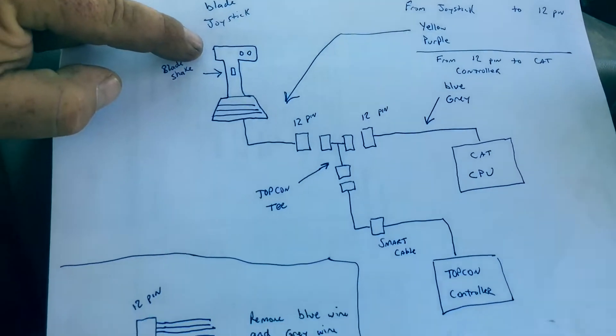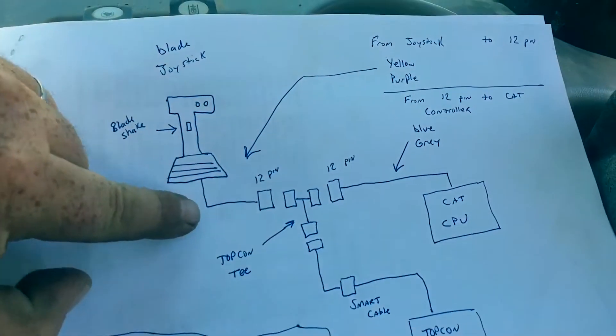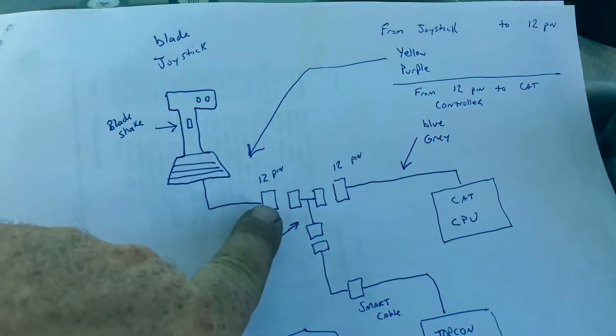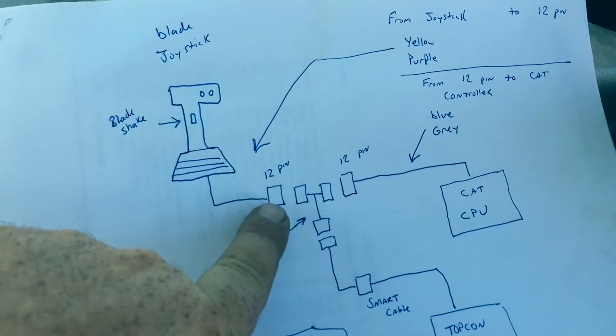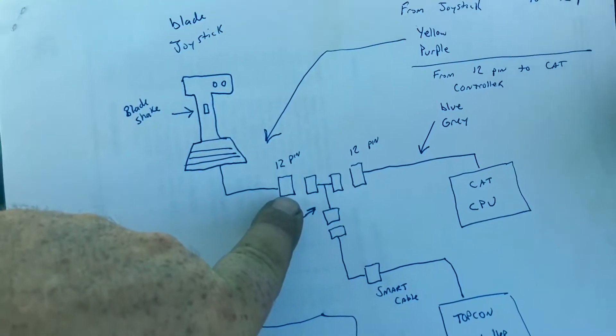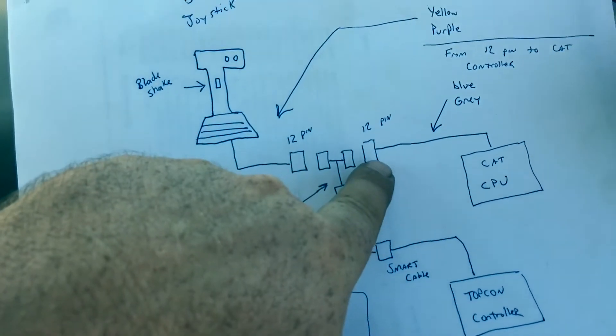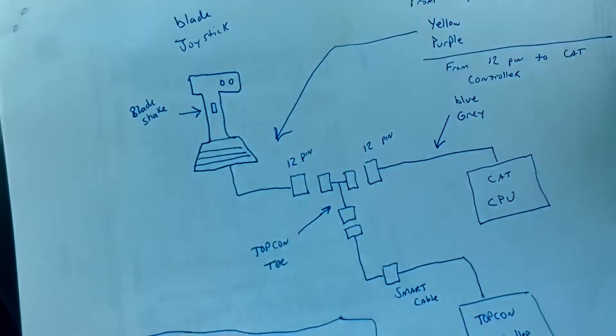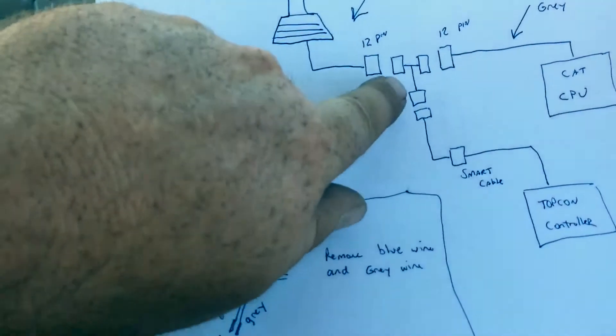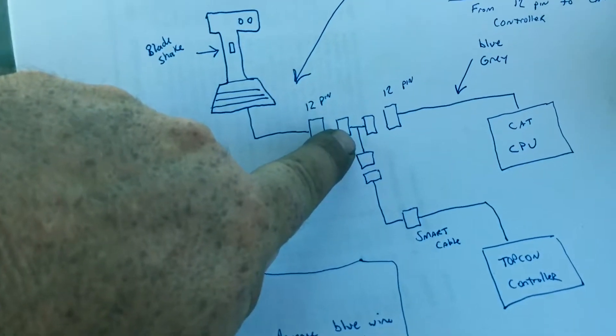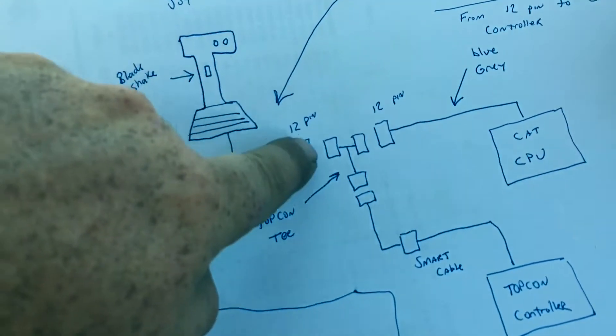So our joystick control. Basically in the configuration with our Topcon it runs down below the dash there on the right side. It ends up becoming a 12 pin Deutz connector. And on the other side, which are both Caterpillar and Caterpillar connections, they run on into the CAT controller. So we're adding a T for our Topcon to use these buttons for Topcon controls.